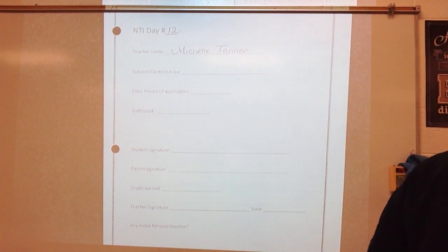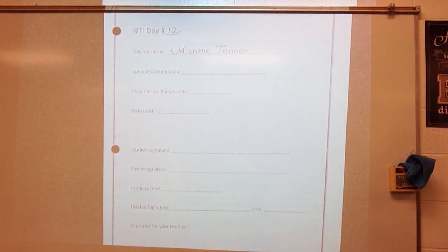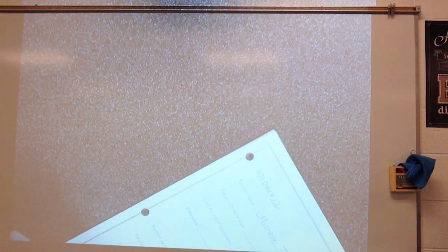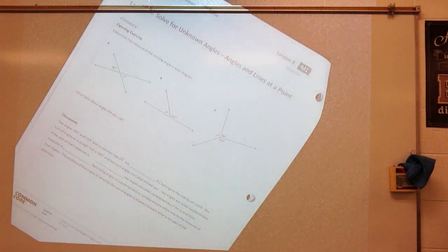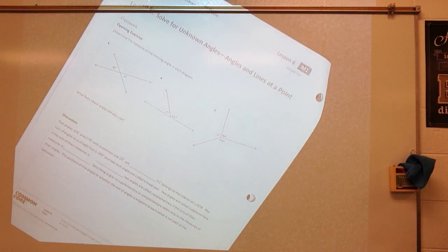Day 12, so make sure you have that packet out, please. This is lesson 6: Solve for unknown angles and lines at a point. Your learning goal for today is that you will review formally learned geometry facts and practice citing the geometric justifications in anticipation of unknown angles and proofs. Let's go ahead and start with the opening exercise.